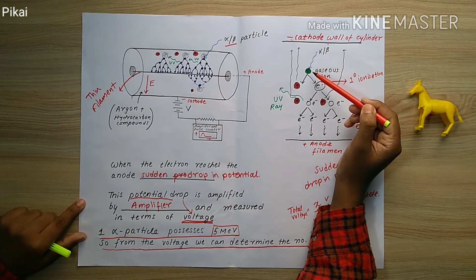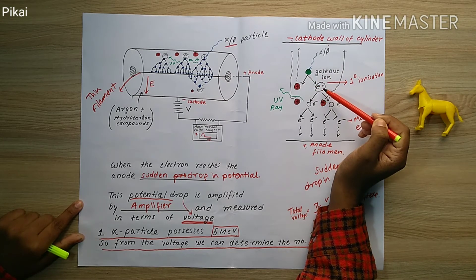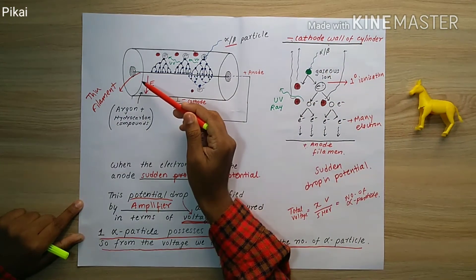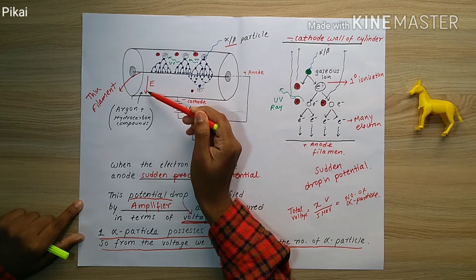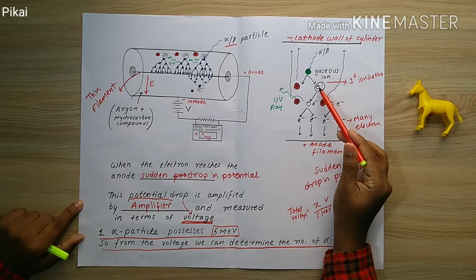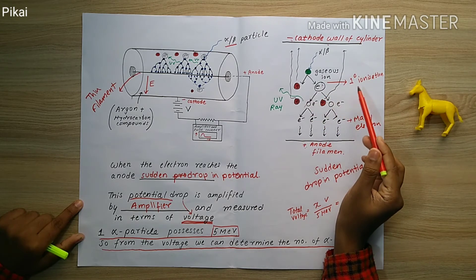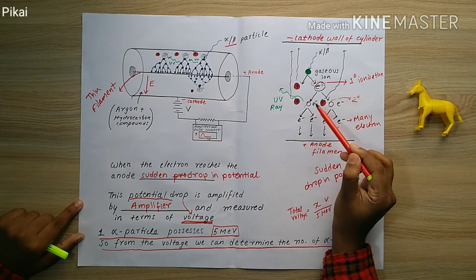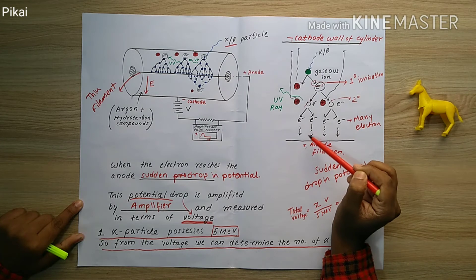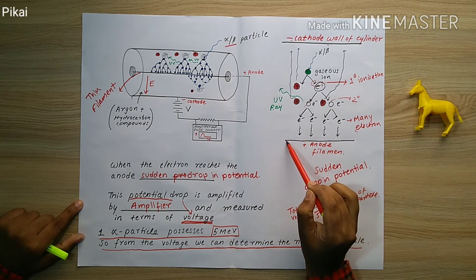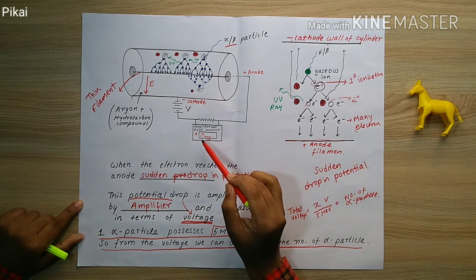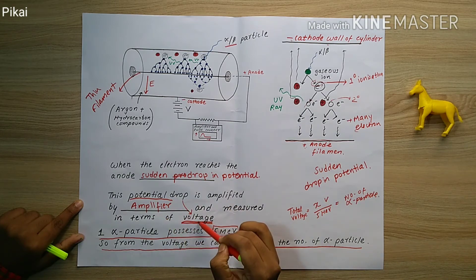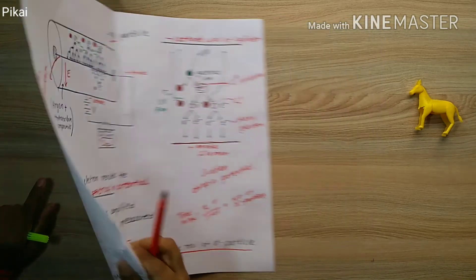To summarize: the alpha particle ionizes the gaseous ions, liberating cations and negative electrons, creating an electric field inside the chamber. The electrons move toward the positive anode through a chain of secondary and tertiary ionizations, while the cations move to the cathode. This change in potential is measured by the amplifier in terms of voltage — that is how the whole process works.